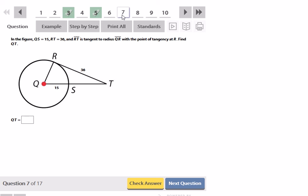In this figure QS is 15, RT is 36, so find QT. Well here in this case, since QS is a radius and so is QR, that means QR is 15. And since this is a radius meeting a tangent at a point of tangency and it's a right triangle, I can use Pythagorean theorem now to find QT, which QT is the hypotenuse.